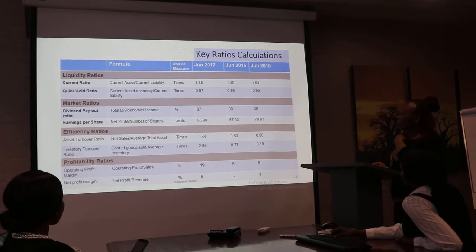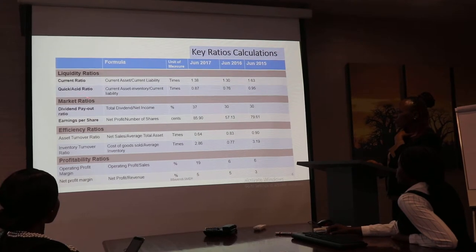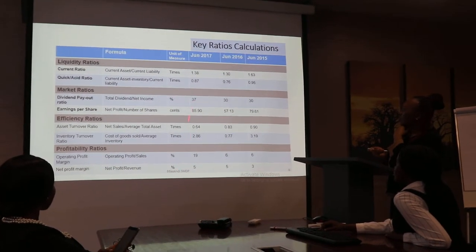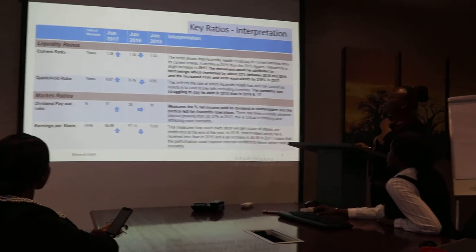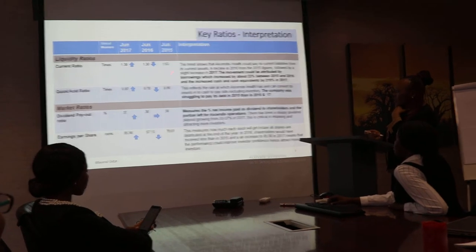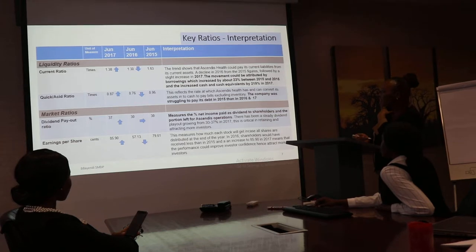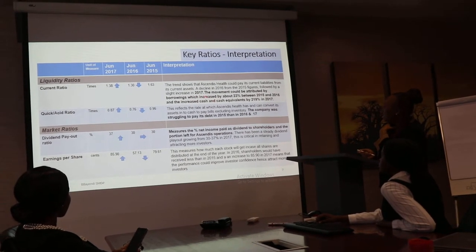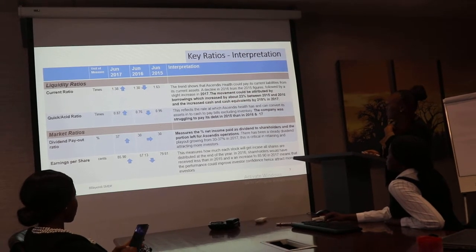Around the ratios, we have selected the liquidity ratios using the current ratio and quick asset ratio, with the unit and formula for each ratio indicated. In terms of analysis, there is a downward trend between 2015 and 2016, largely for the current ratio, due to the increase in borrowings of 23% between 2015 and 2016.